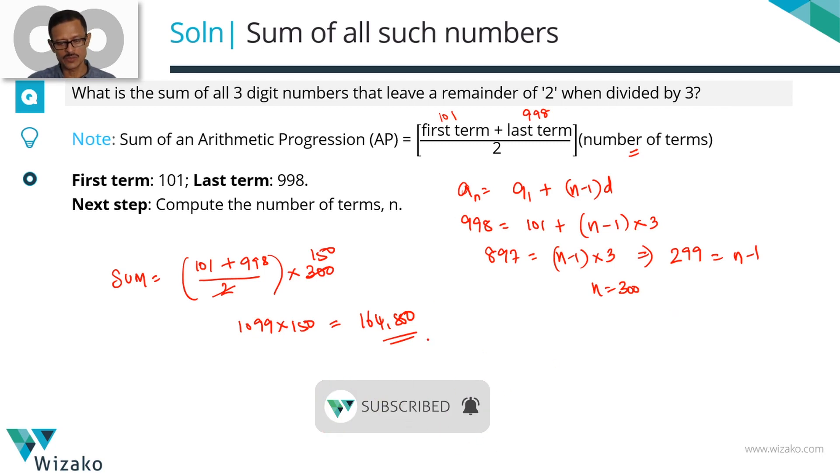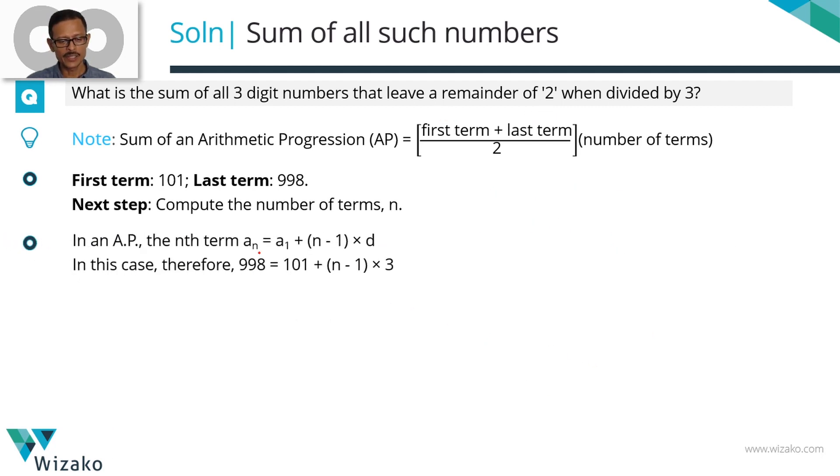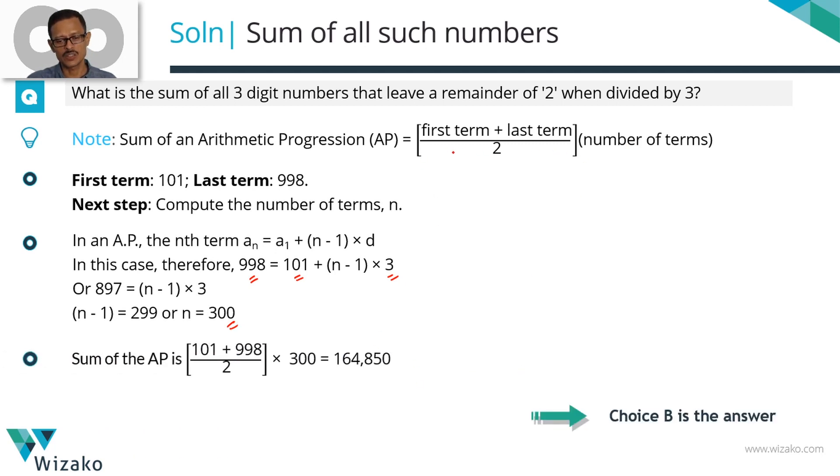Quickly summarize computing the number of terms and the sum in printed form. I'm going to use an equals a1 plus n minus 1 times d to compute the number of terms. An is 998, first term is 101, common difference is 3. Solving for n we get n equals 300. Plug all these values in this formula. First term 101, last term 998 divided by 2 times 300 gives us a sum of 164,850.